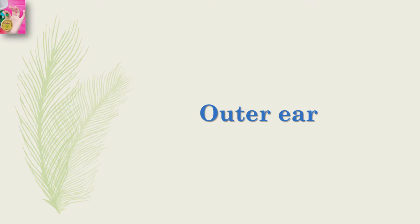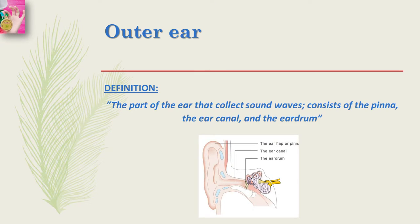We will start with the outer ear. The definition I've included is from Psychology by Hockenberry and Hockenberry, Second Edition. According to that book, the outer ear is the part of the ear that collects sound waves and consists of the ear canal and the eardrum. It consists of the pinna, air canal, and eardrum.